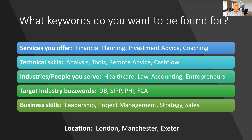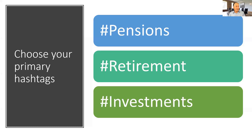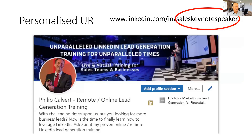Don't rush the keywords exercise — take your time. If you've worked with colleagues, get them to do the same exercise and see how similar your words are. Put yourself in the shoes of your dream client and think what might they be typing into the search box. Use hashtags as well — people are using hashtags on LinkedIn. Some people type 'hashtag pensions' into the search box and the whole news feed changes to show only pensions-related content. Also personalize your URL — I've even taken my name out and replaced it with keywords, so a conference organizer searching for a keynote speaker is more likely to find me.